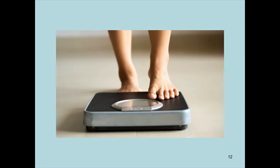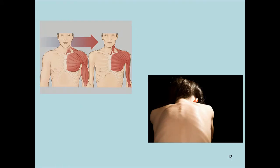Another significant red flag is unexplained weight loss. If someone has been dieting intentionally that doesn't count, but unexplained weight loss could indicate serious pathology such as cancer or systemic disease. You need to carefully question patients to determine whether the weight loss is intentional. One feature of advanced systemic disease is cachexia — illustrated here with sunken cheeks, visible ribs, and prominent muscles — though some people are naturally slim.